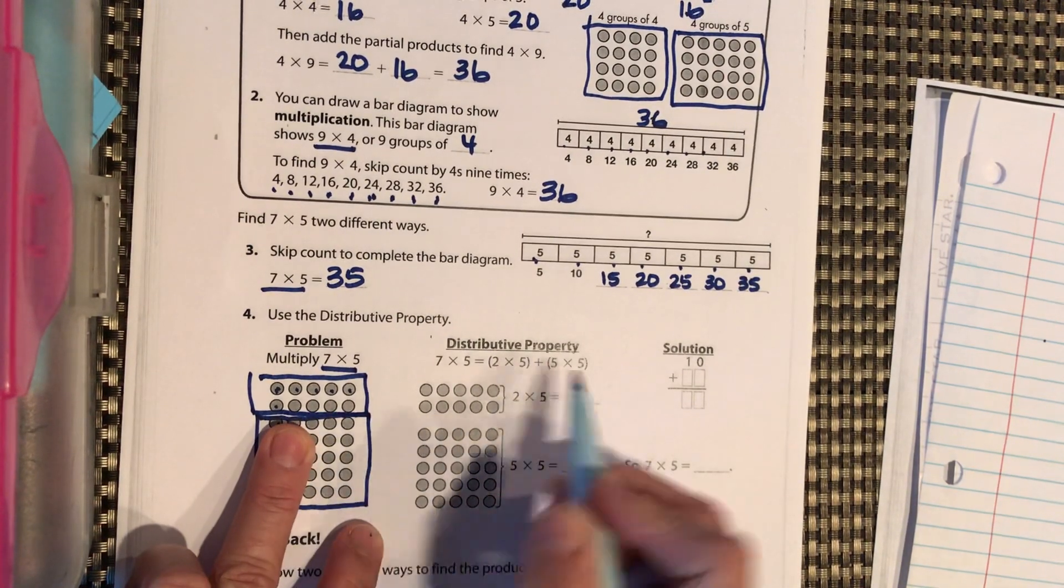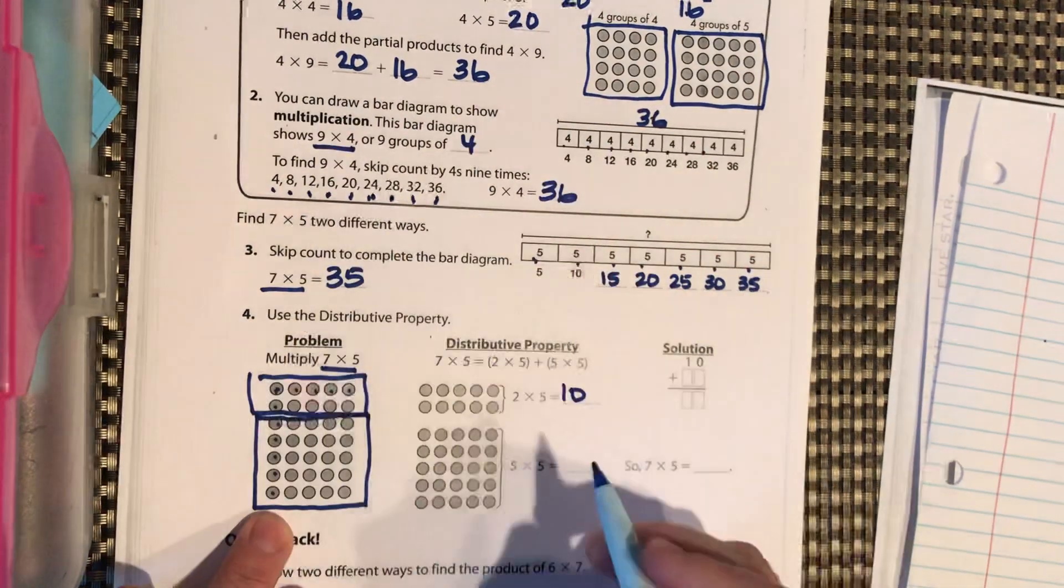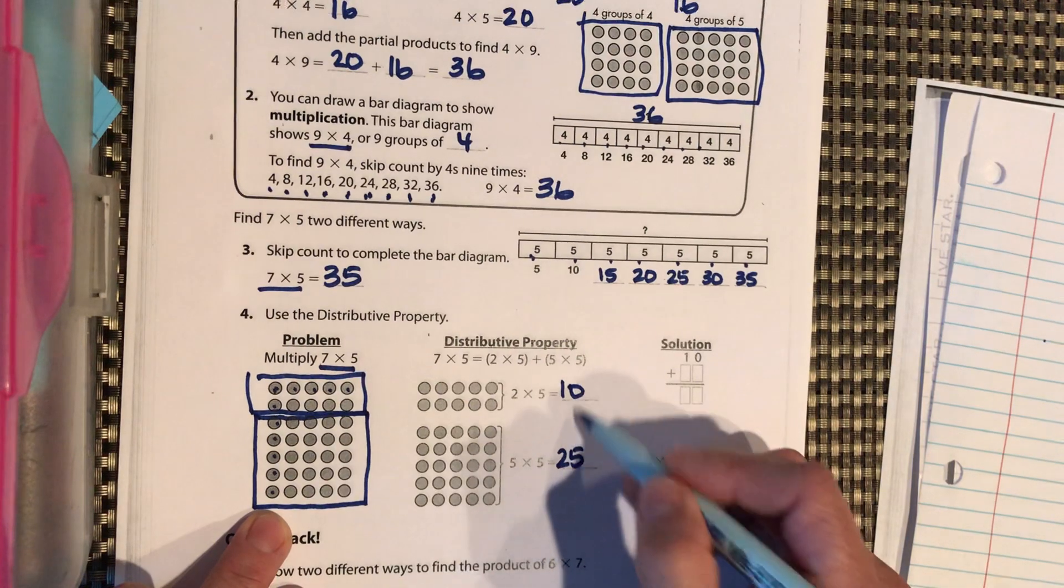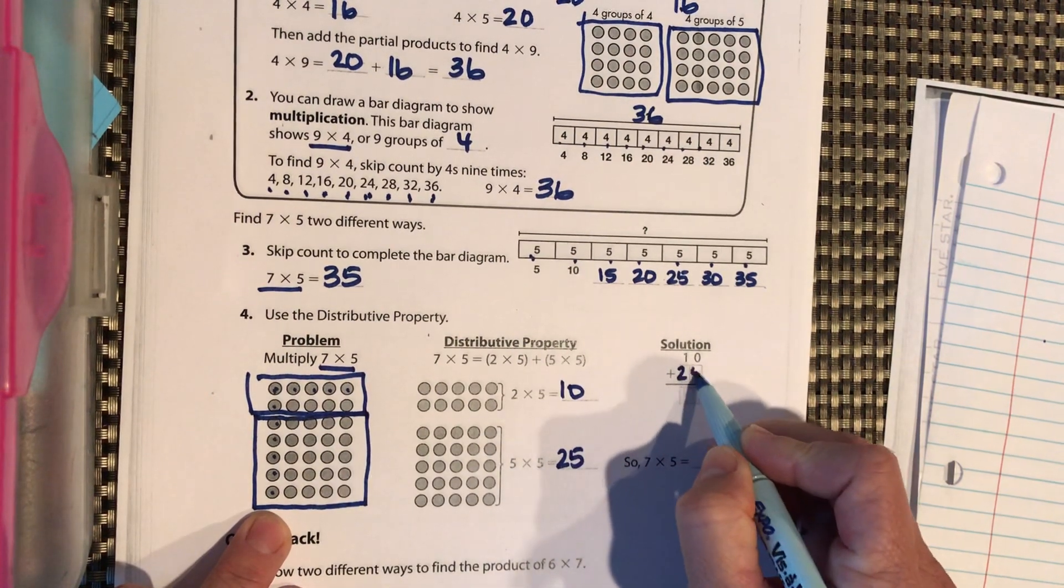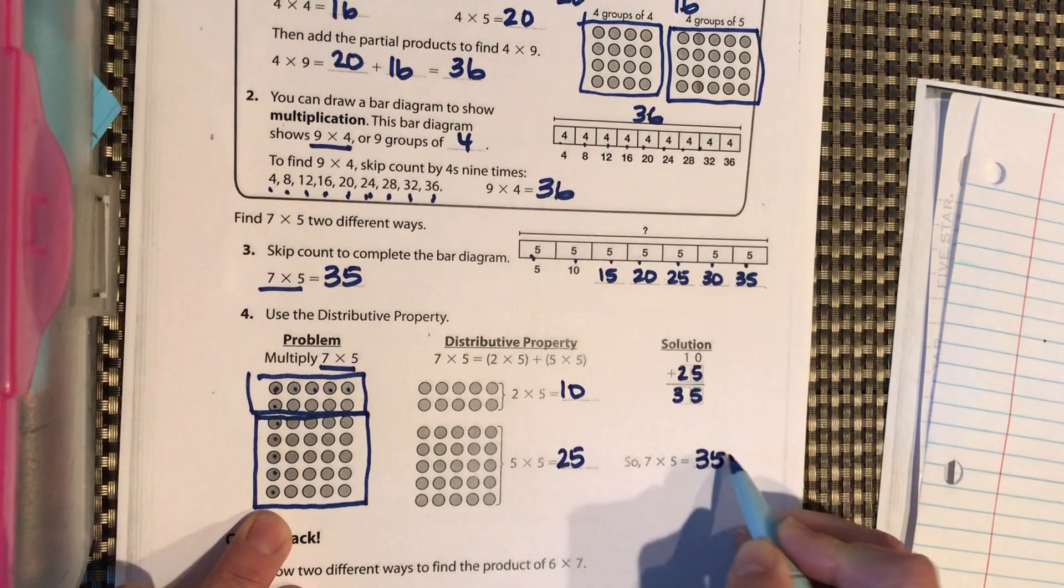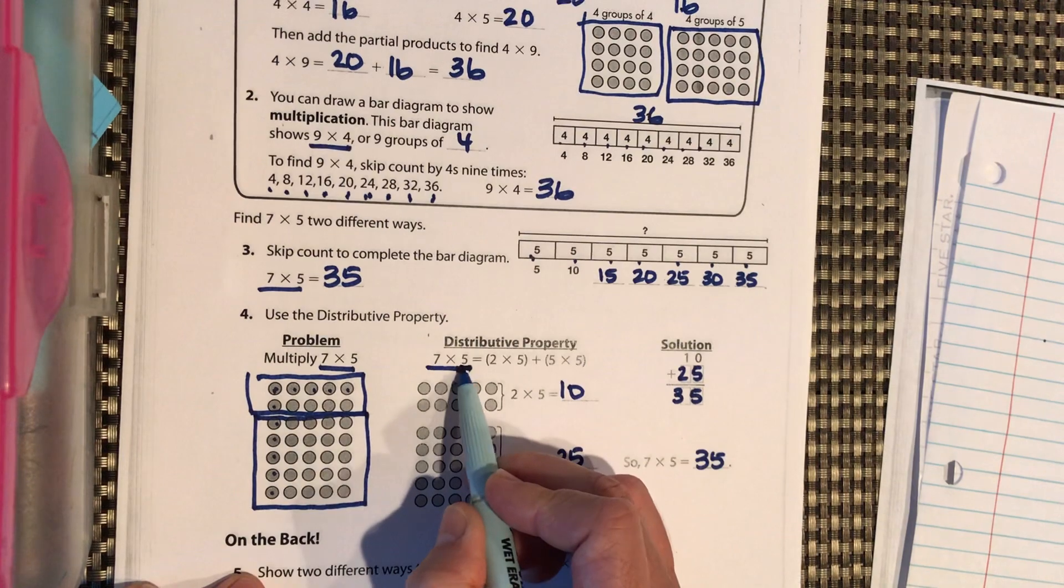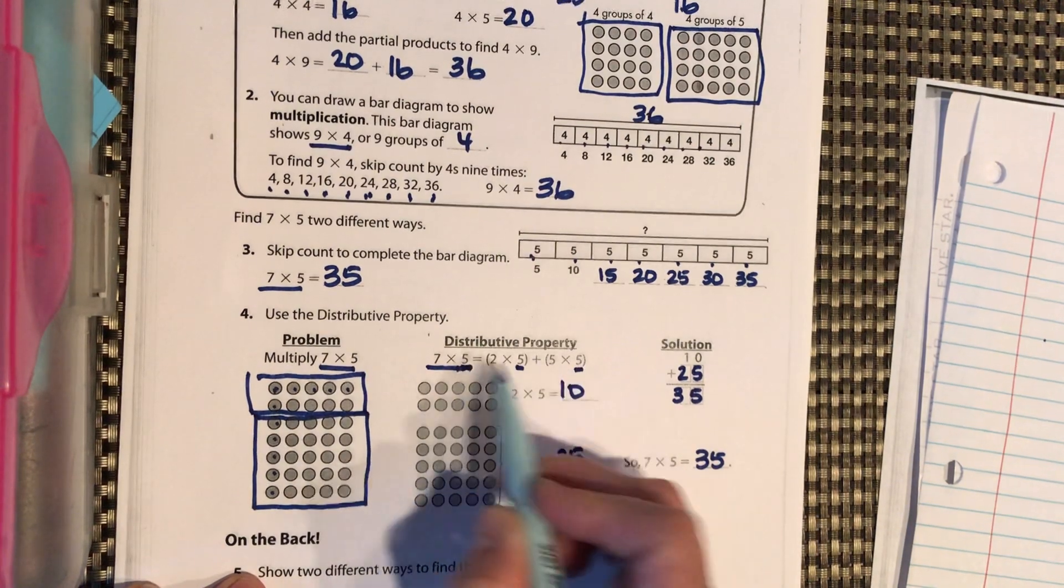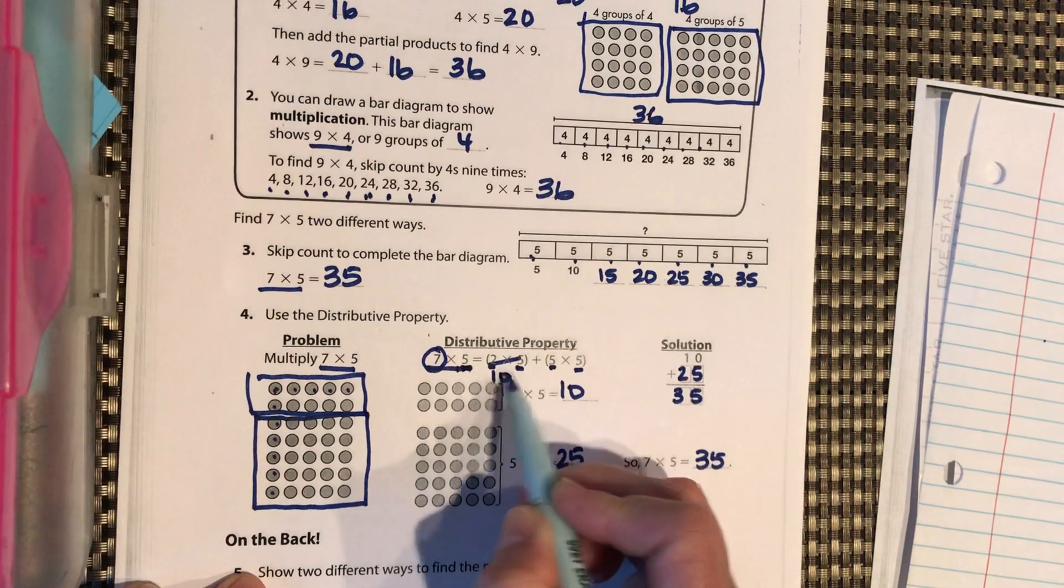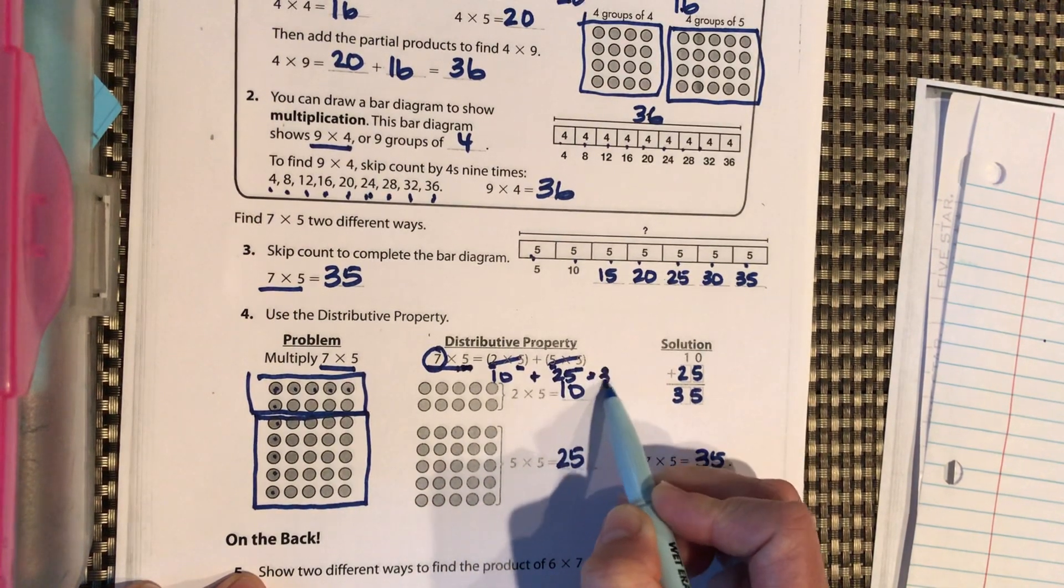So 2 groups of 5 is 10. And 5 groups of 5, remember, 1 whole hand is 25. Okay? And then we can add 10 plus 25 and get 35. And if we're using our cool parentheses here, 7 groups of 5, the 5 stayed the same. And we broke down the 7 into 2 and 5. So 10, 25, 10 plus 25 equals 35.